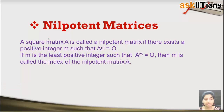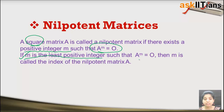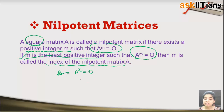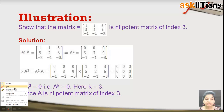Next is the nilpotent matrix. A square matrix A is called nilpotent if there exists a positive integer m such that A^m equals the zero matrix. If m is the least such positive integer, then m is called the index of the nilpotent matrix. For example, if A is non-zero but A² equals the zero matrix, then the index of A is 2.